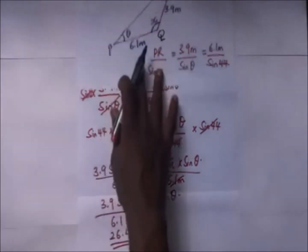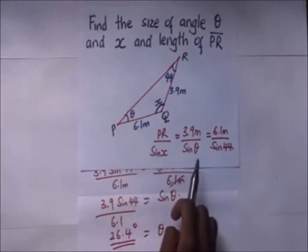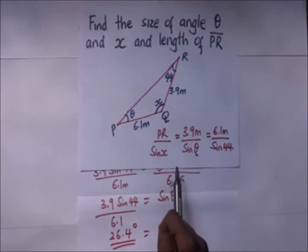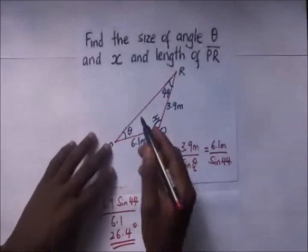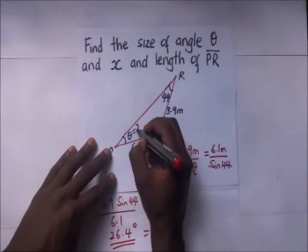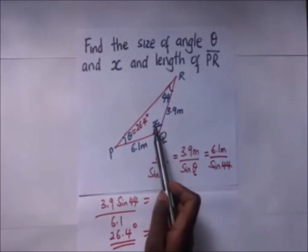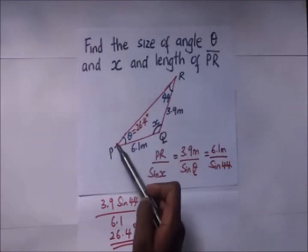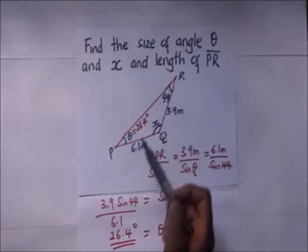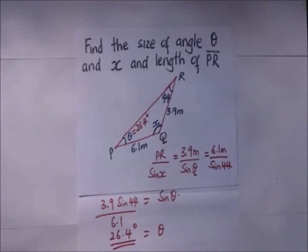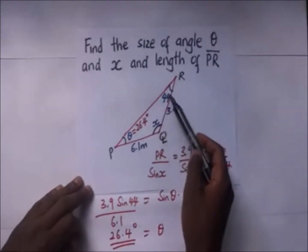So 26.4 degrees is the angle theta. After getting 26.4 here, now we proceed to get the other unknowns. When we have 26.4 here, theta is 26.4 degrees, we can get the value of x because now this is a triangle and we know that the total angle sum of a triangle is 180 degrees.